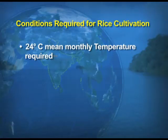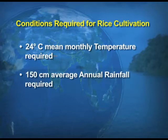The temperature conditions required for rice are around 24 degrees Celsius mean monthly temperature. The annual rainfall required is 150 cm. Keep in mind — rice is a crop which requires water at every stage, whether growing, cooking, or even after eating. It is an irrigated crop in areas where rainfall is less than 100 cm.